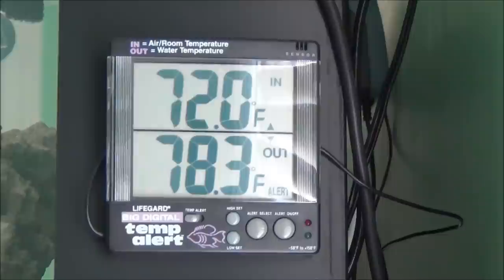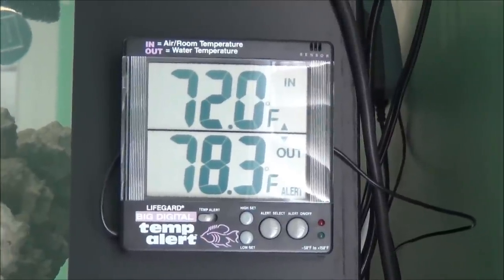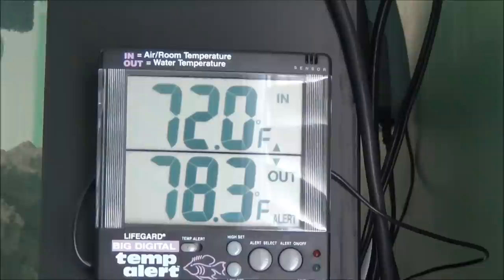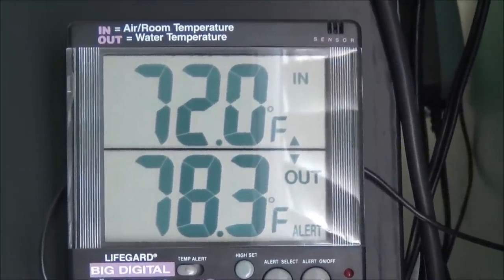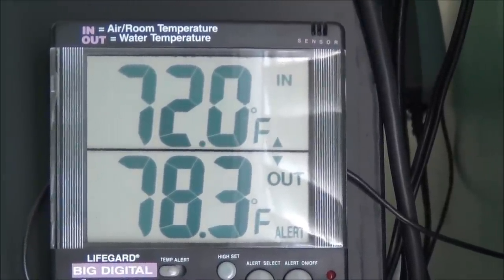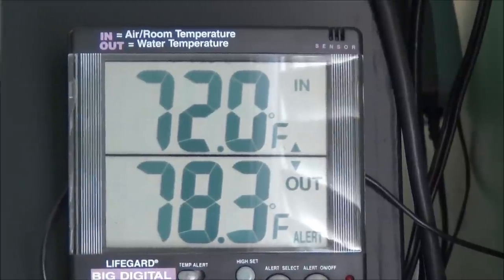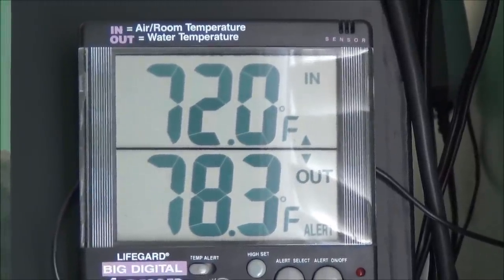And here's a temperature probe for my other temperature readout, which I had to dig this out of storage too. I've had this for a long time. This is my lifeguard temperature alert. And you see the temperature on bottom, which is in the aquarium, that's 78.3 degrees. So in the summertime, my aquarium shouldn't get any warmer than 80 degrees Fahrenheit.